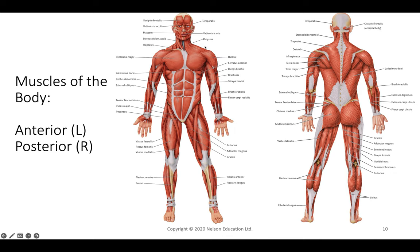On the left we have the anterior of the human body, on the right the posterior. Starting at the top: the occipitofrontalis runs along the frontal bone connecting to the occipital bone at the back, with a frontalis region in front and a small occipital belly in the back. Around the eye socket are the orbicularis oculi. The masseter is involved in chewing. The orbicularis oris goes around the mouth — 'orbicularis' means runs around, 'oris' means mouth. On one side we see deep muscles with the sternocleidomastoid and trapezius, on the other the superficial muscles.